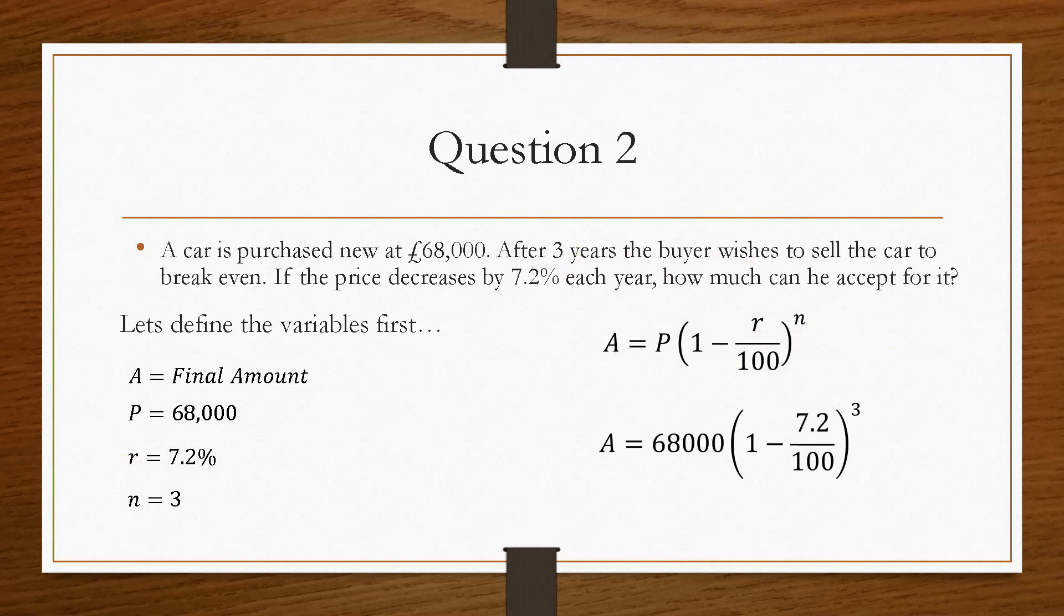If we substitute in the values and rearrange, we'll get a minimum value of £54,400. So that's the minimum amount that he would have to accept. And that's how you would go about solving that kind of problem.